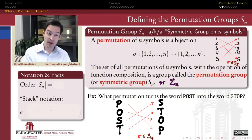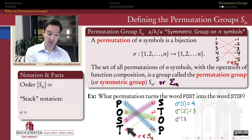If I wanted to be explicit about what this function is, I would say: what is sigma applied to each element in the domain? If I number the elements one through four, then this is the permutation that carries the first letter P into the fourth position.